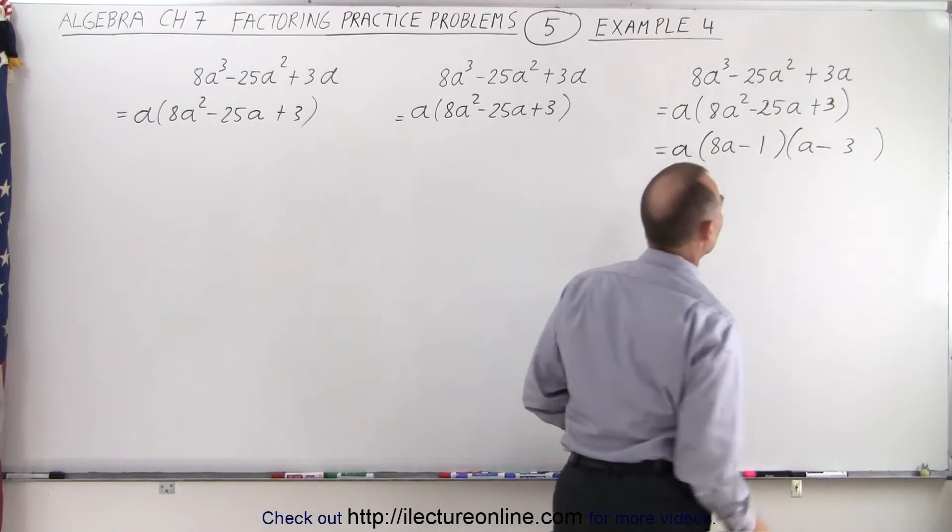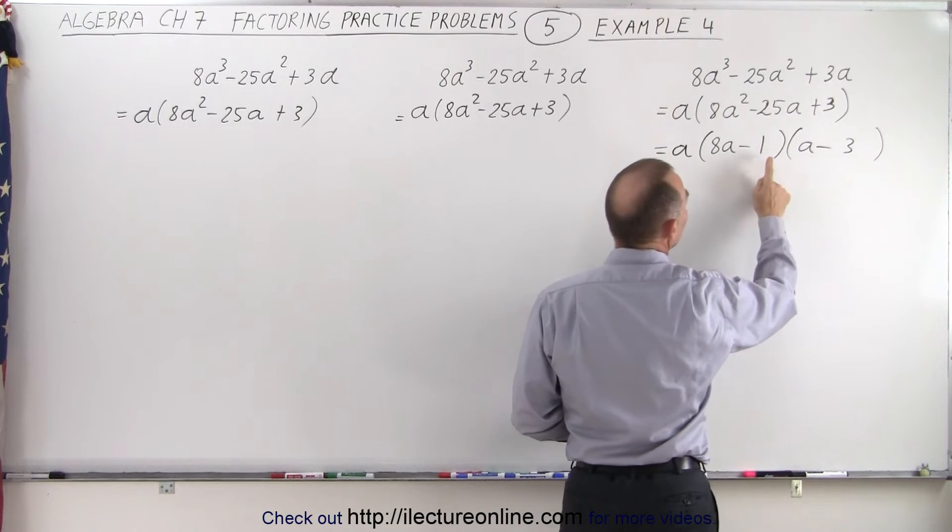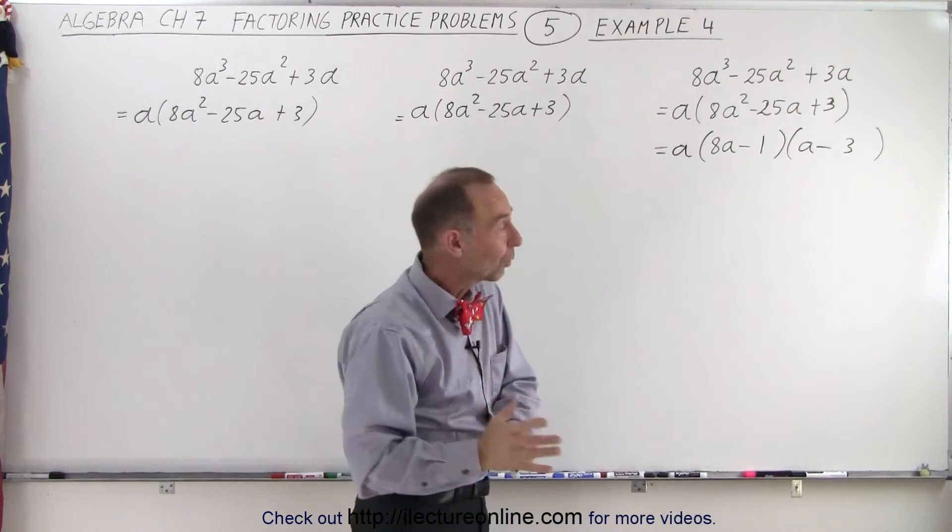Now notice what happens. If I get rid of this, notice 8a times negative 3 is negative 24a. Minus 1 times a is minus 1a. Together, minus 25a. That is the correct factored form of our original problem.